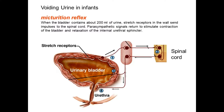Voiding urine in infants: the micturition reflex. When the bladder contains about 200 ml of urine, stretch receptors in the wall send impulses to the spinal cord. Parasympathetic signals return to stimulate contraction of the bladder and relaxation of the internal urethral sphincter.